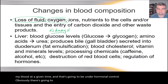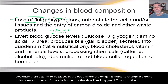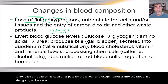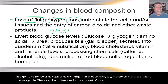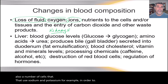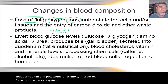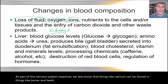Oxygen levels in the blood will change: oxygen increases as capillaries pass by the alveoli and oxygen diffuses into the blood, and it will be lower as capillaries exchange that oxygen with, say, muscle cells taking that oxygen in. There can also be differences in the amount of ions — salts in particular. Cells use sodium and potassium as part of the nervous system response, and calcium can be stored in bones and teeth, also under hormonal control.